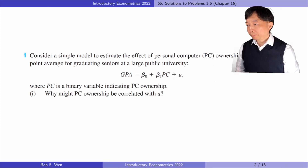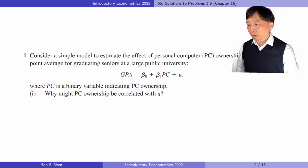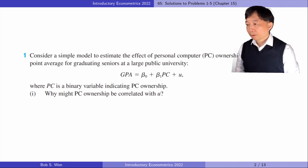For the first problem, consider a simple model to estimate the effect of personal computer ownership on college GPA for graduating seniors at a large public university, where PC is a binary variable indicating PC ownership. In part 1, why might PC ownership be correlated with the error term?